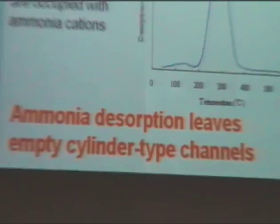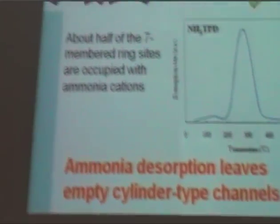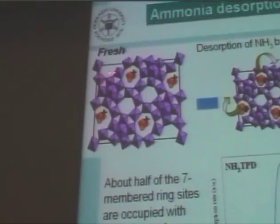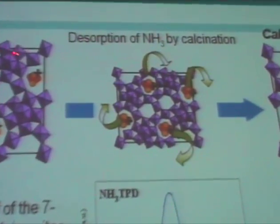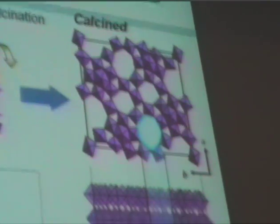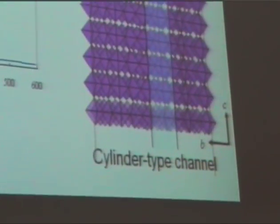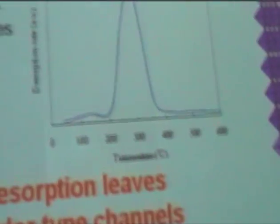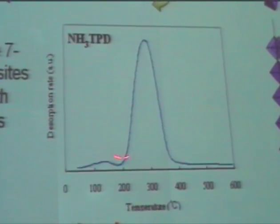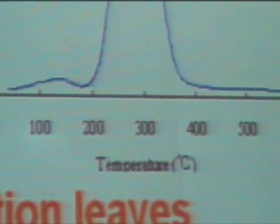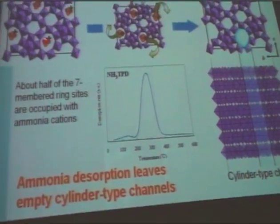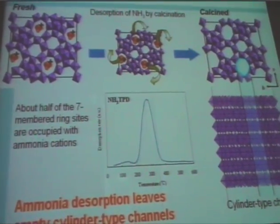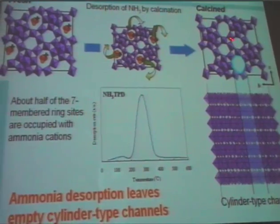We conducted some experiments to explore this phenomenon. After the preparation of the solid, by synthesis, there is some amount of ammonium ions located inside the channels. But by heating the sample at a certain temperature — let's say 300°C in nitrogen — we can remove most of the ammonia to the outside, leaving the pore empty.